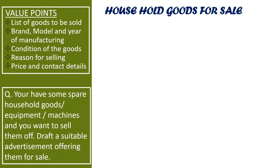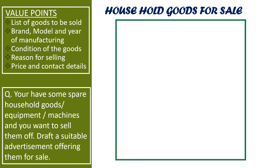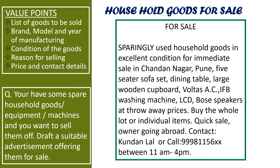Question: You have some spare household goods, equipment, and machines, and you want to sell them off. Draft a suitable advertisement offering them for sale. Heading in capital letters: 'FOR SALE.' Sparingly used household goods in excellent condition for immediate sale in Chandanagar, Pune — five-seater sofa set, dining table, large wooden cupboard, Voltas AC, IFB washing machine, LCD, Boss speakers at throw-away prices. Buy the whole lot or individual items. Quick sale — owner going abroad. Contact Kundalala or call 999-811-56XXX between 11am to 4pm. Enclose your content in a box.